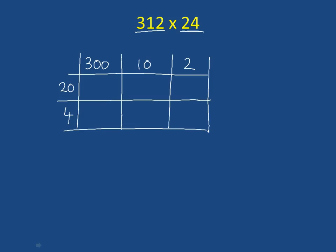So first box, 20 times 300. Again, we're going to use the first numbers. 2 times 3 is 6. And we're going to add on the zeros. So there's three zeros here: 1, 2, 3. 4 times 300. Well, we're going to do 4 times 3 is 12. And we're going to add on these two zeros.